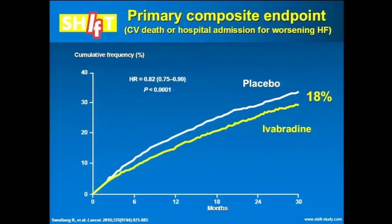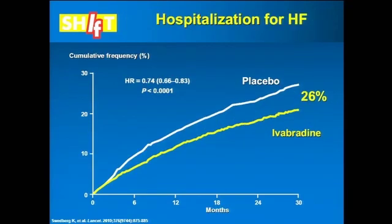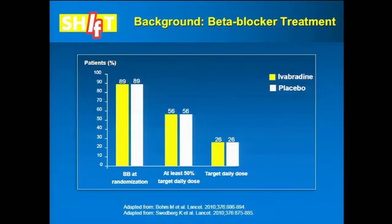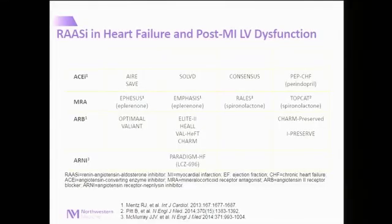The available data demonstrated that a composite endpoint was improved, but within this composite of hospitalization and cardiovascular death, it was hospitalization for heart failure that improved the most. However, in those patients on target dose beta blockers, we didn't see this effect. So for patients who are unable to be on target dose beta blockers and have a persistent increase in heart rate, we believe there is a benefit with the addition of ivabradine to a regimen that includes beta blockers in those in sinus rhythm.